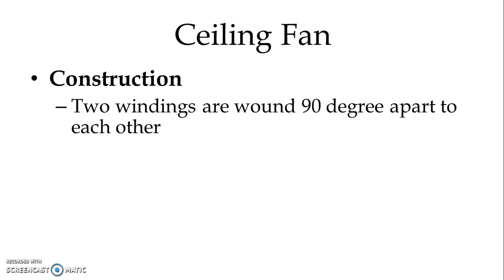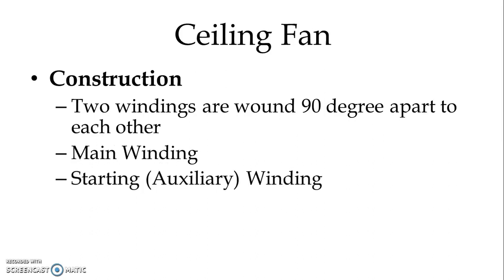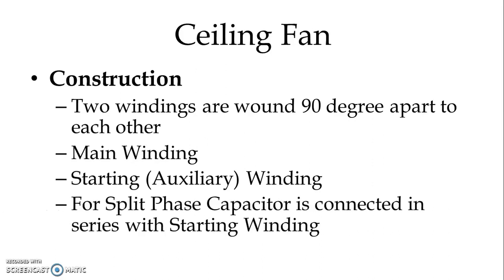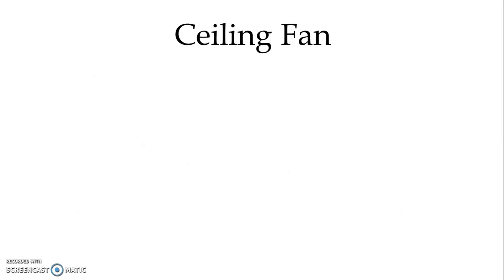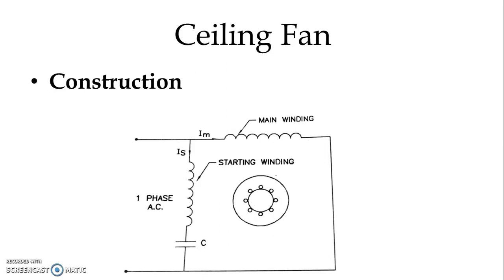We have two windings: one is known as the main winding and one is known as the auxiliary winding. Both windings are 90 degrees apart from each other. The starting winding may also be known as the auxiliary winding. For the purpose of splitting the phase, a capacitor is connected in series with the starting winding. In the figure we can see the main winding and the starting winding with the capacitor connected in series.